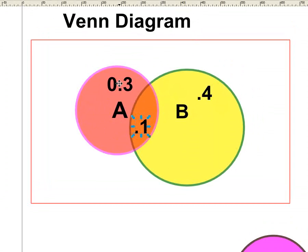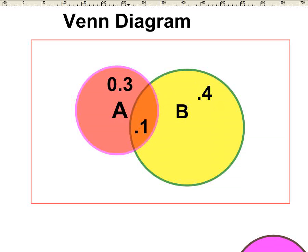The probability of A is 0.3, so everybody in A is in the pink circle. The probability of B is 0.4, in the yellow circle. If you want all the people that are either A or B, you can't just add 0.3 to 0.4. There are 0.1, 10% of people, in both. If you just add 0.3 plus 0.4 you get 0.7, but you double count that 10%. The addition rule says add 0.3 plus 0.4, then subtract off the people counted twice in the orange section.